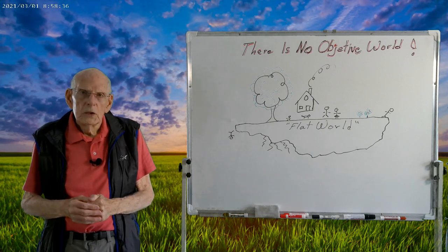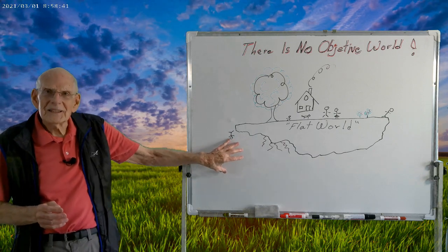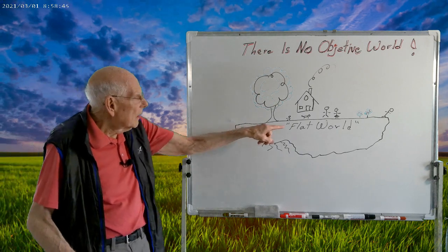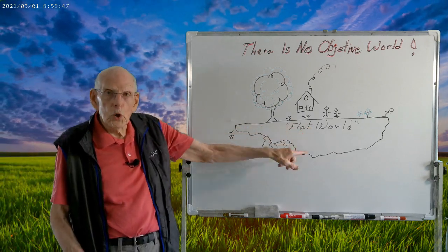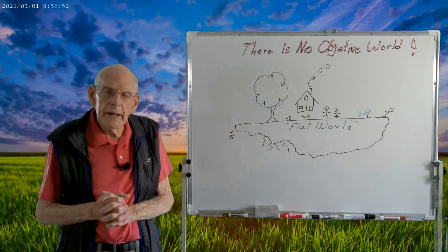that what we think is the objective world is basically eye candy developed by your inside belief system. So, let's look at the flat world. Now, I've started a little diagram here. And you can see there's a flat world. And on that flat world,